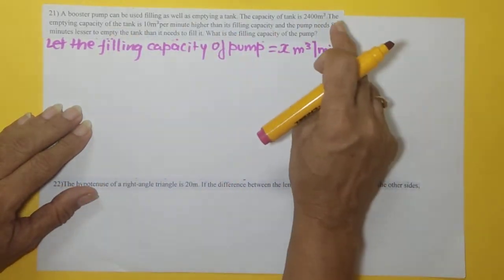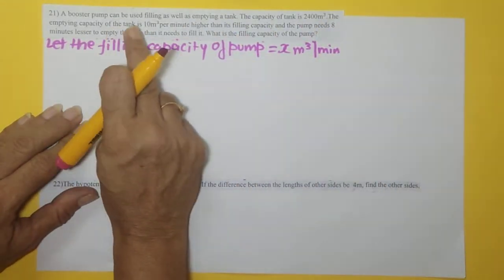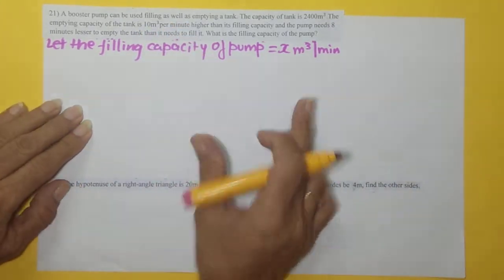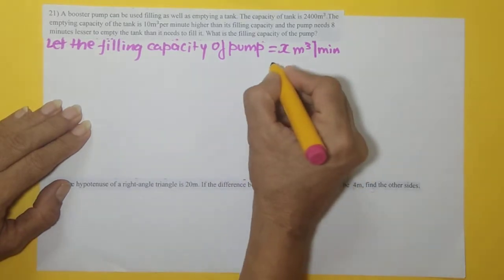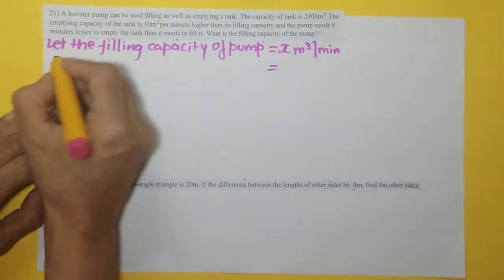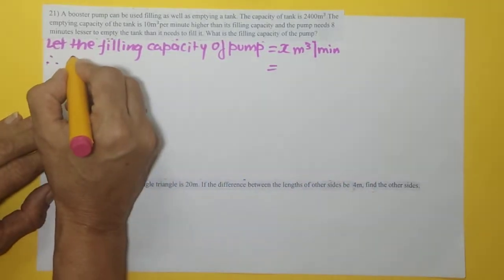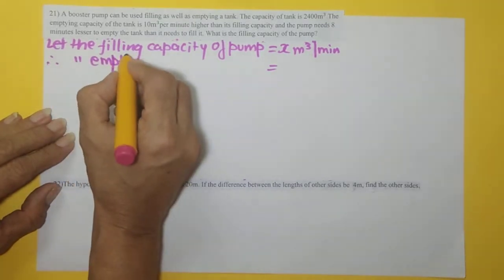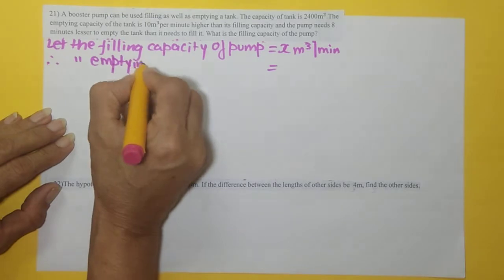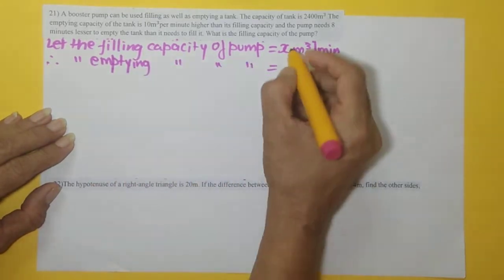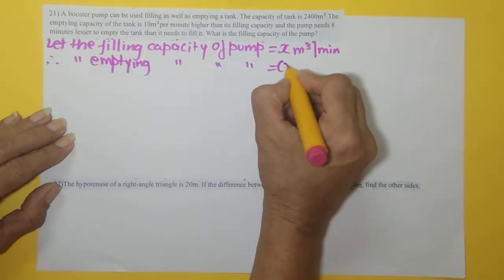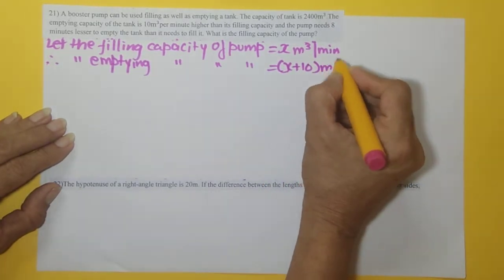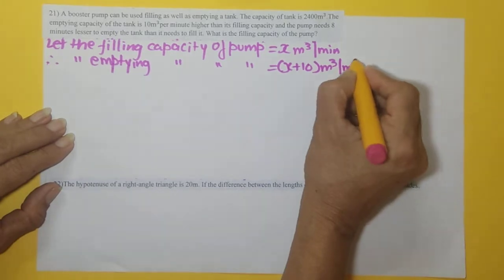Now let us read. The emptying capacity of the tank is 10 meter cube per minute higher than its filling capacity. So therefore, the emptying capacity of the pump will be equal to x plus 10 meter cube per minute.